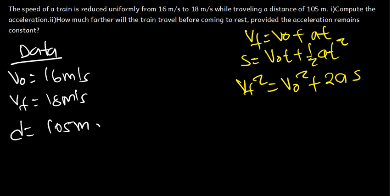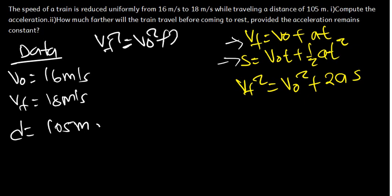From these three formulas, which one is suitable based on the data we have? The first formula requires us to have time, and the second formula also requires time, but we don't have time. Therefore, the only formula that can work in this case is the third formula. We are going to use this formula to find our acceleration, where S is the displacement.